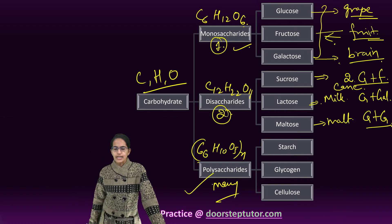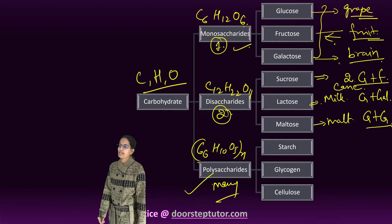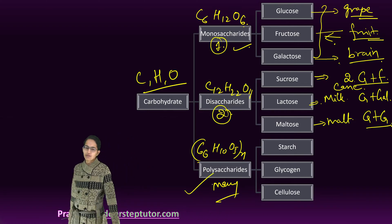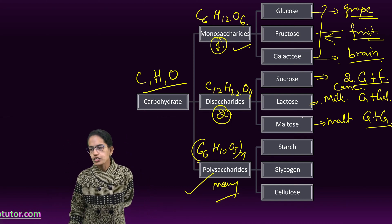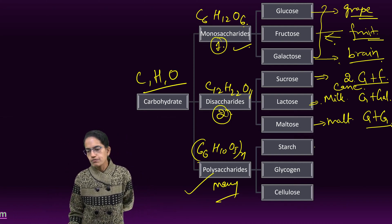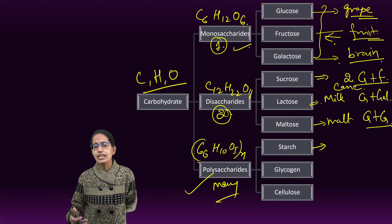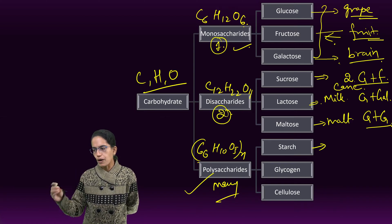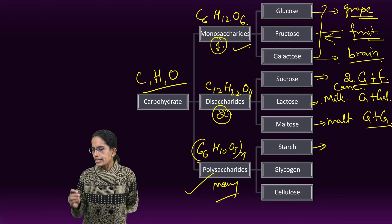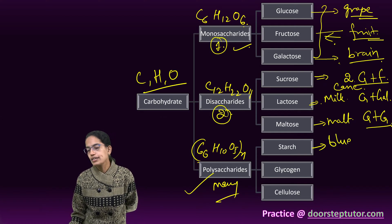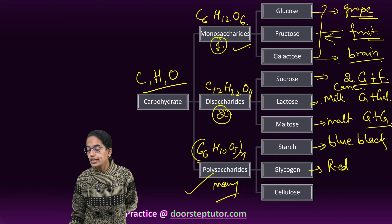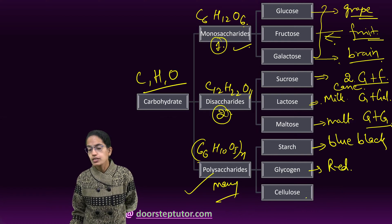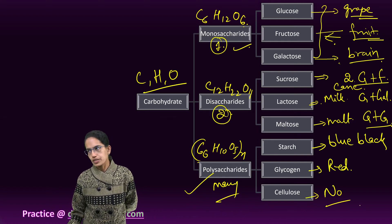Polysaccharides — three important ones are starch, glycogen, and cellulose. Starch is found in maize, rice, barley, and potato. It is tasteless, white and powdery, and gives a blue-black color with iodine. Glycogen gives a red color with iodine. Cellulose gives no color with iodine.